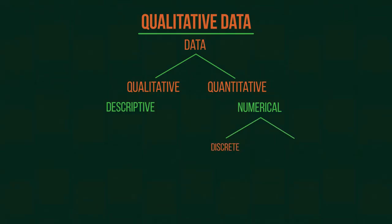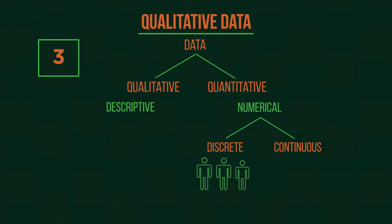Quantitative data can be discrete or continuous. Discrete data can only take certain values, like how many siblings you have. You can't have 2.63 siblings.